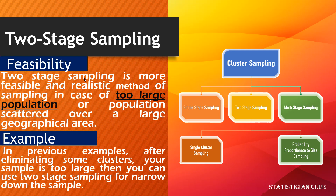Feasibility: Two-stage sampling is a more feasible and realistic method of sampling in the case of a very large population or a population scattered over a large geographical area. In the previous example, after selecting some clusters if your sample is still too large, then you can use two-stage sampling to narrow down the sample.